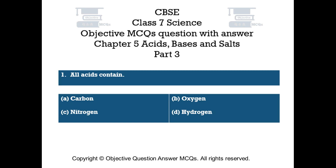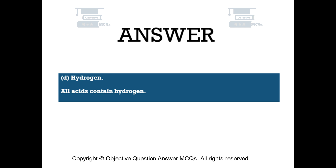Question number 1: All acids contain. Option A: carbon. Option B: oxygen. Option C: nitrogen. Option D: hydrogen. The right answer is option D — hydrogen. All acids contain hydrogen.